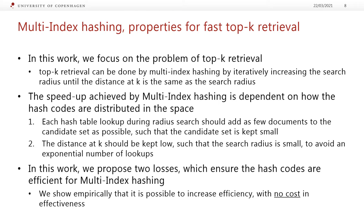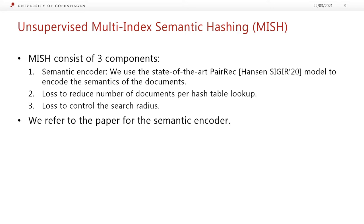Our proposed algorithm is called supervised multi-index hashing, which consists of three components. We have a semantic encoder — in this paper, we use a state-of-the-art semantic encoder called PAIREC, which ensures the hash codes encode the semantics of the documents. We then have our contribution: two unique losses — first, to reduce the number of documents per hash table lookup, and second, to control the search radius, which corresponds to the distance at k.